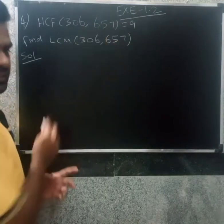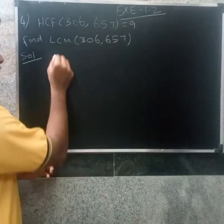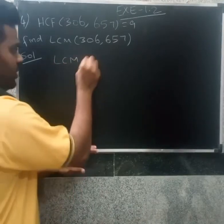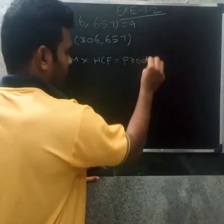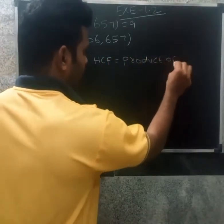We are going to discuss the LCM of 306, 657. First we are going to discuss the basic formula. LCM into HCF equals product of two numbers. This is the HCF formula.